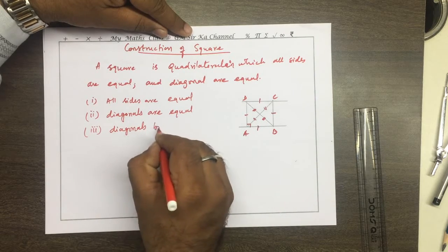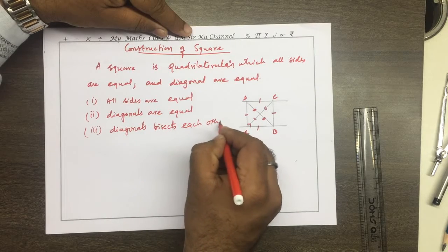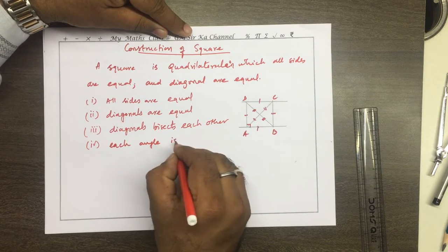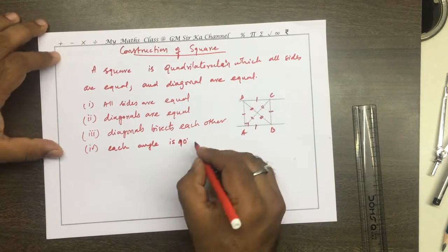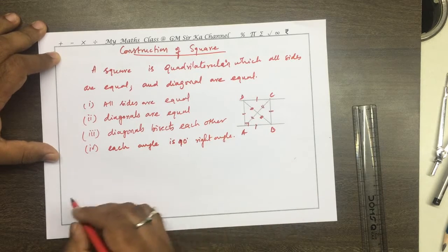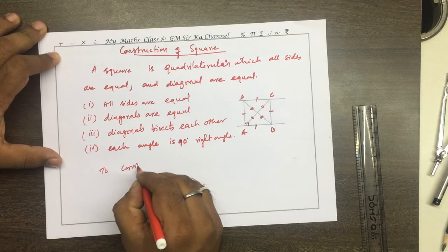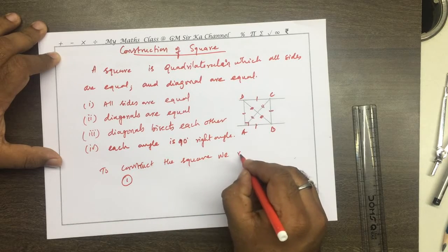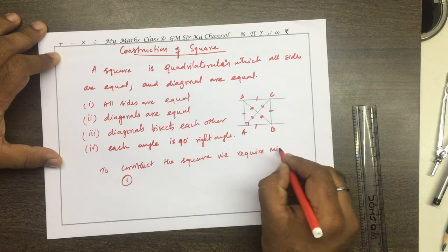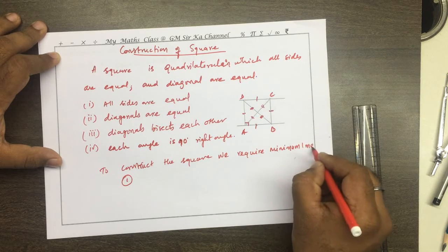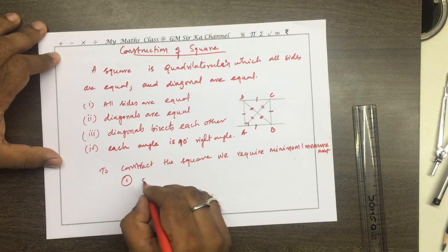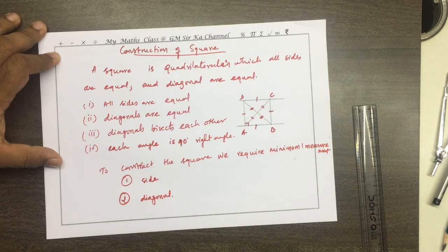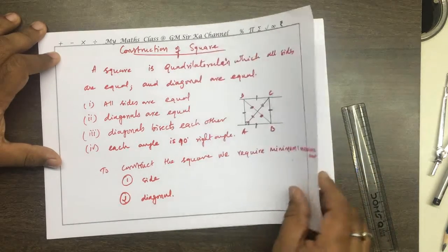Diagonals bisect each other and each angle is equal to 90 degrees, or we can say it is a right angle. To construct a square, we require a minimum of one measurement, and that measurement is the side — or we can also use the diagonal. So let us see how to construct the square in an example.